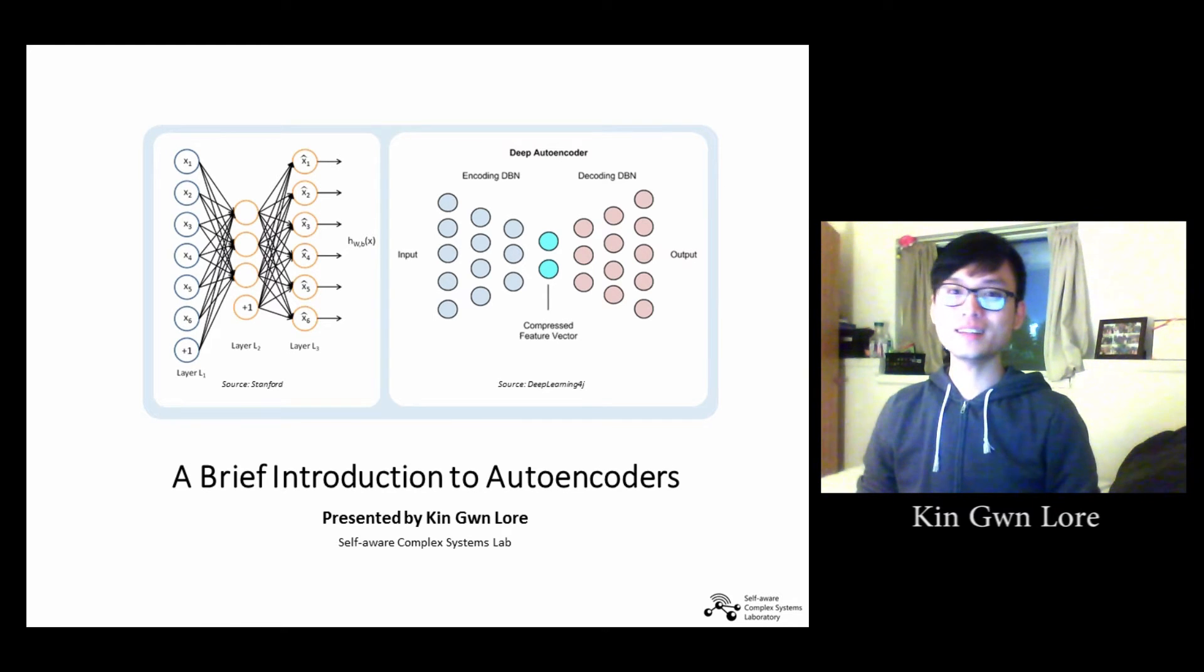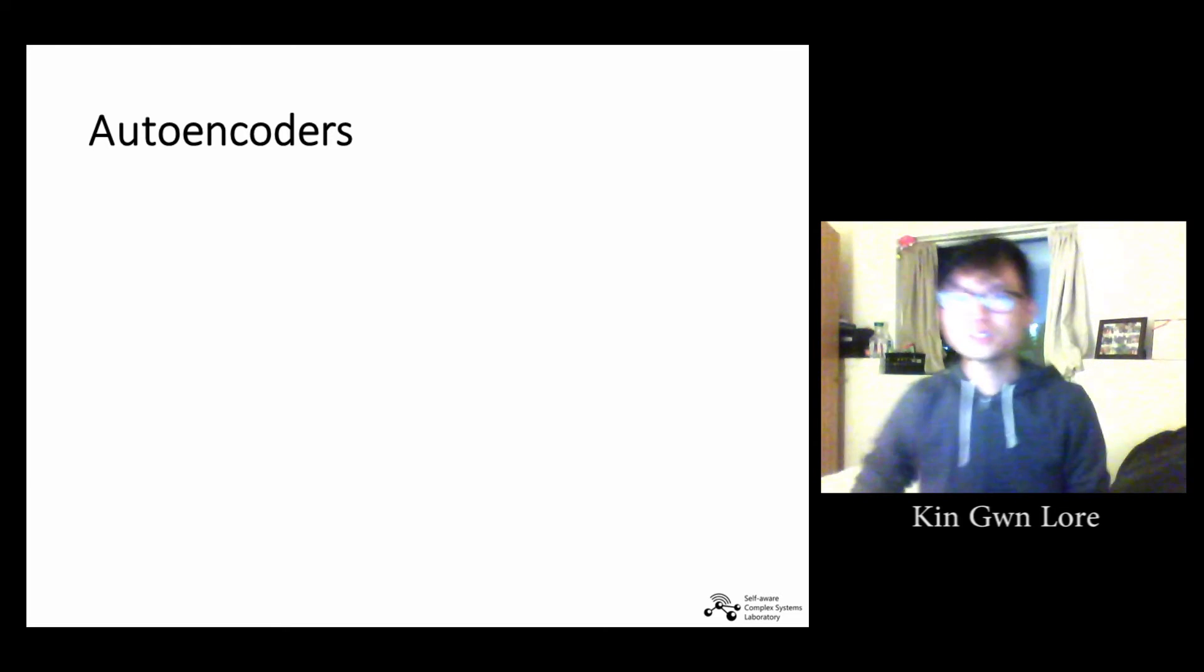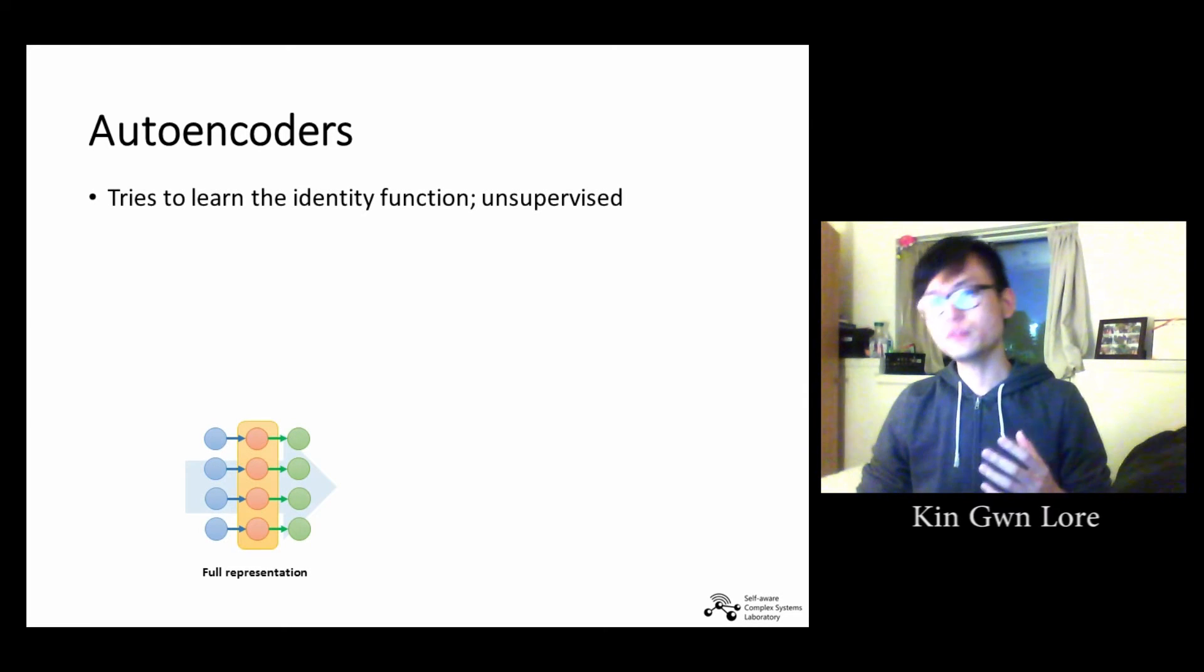Hi everyone, my name is Kin and in this presentation I will give a brief introduction to autoencoders. An autoencoder tries to learn the approximation to the identity function in an unsupervised manner so as to output a reconstruction that is similar to its input.